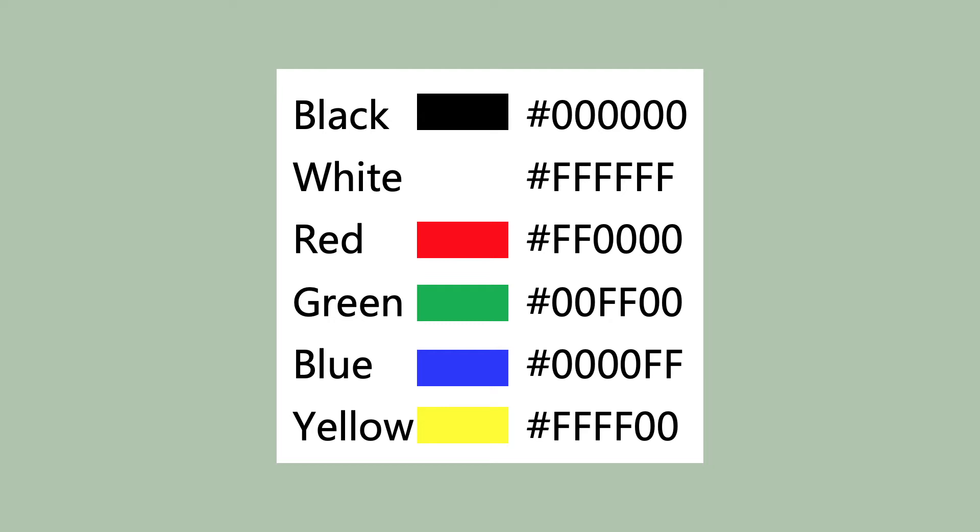The black and white values may seem backwards to you, but with monitors, when they're turned off, there is no light getting emitted — so that would be black, or all zeros. When every pixel is all the way on, it is all Fs, or white — all the light is getting emitted.